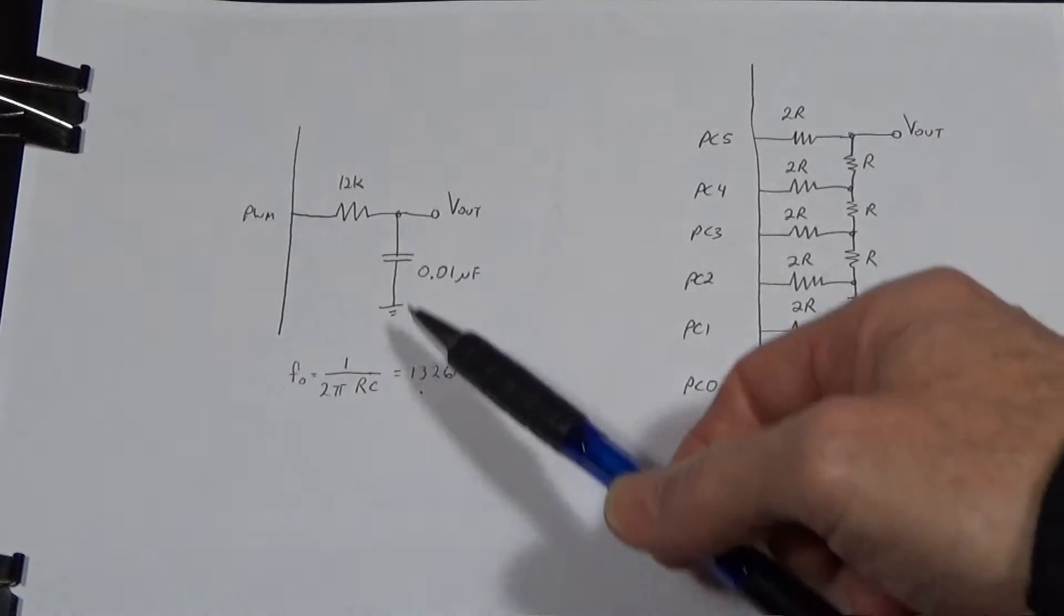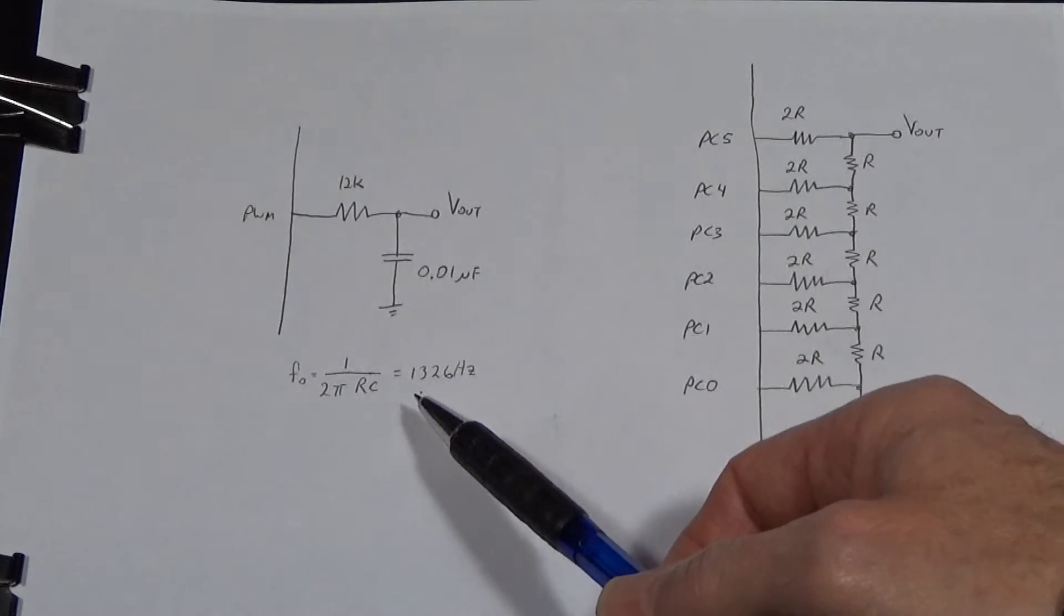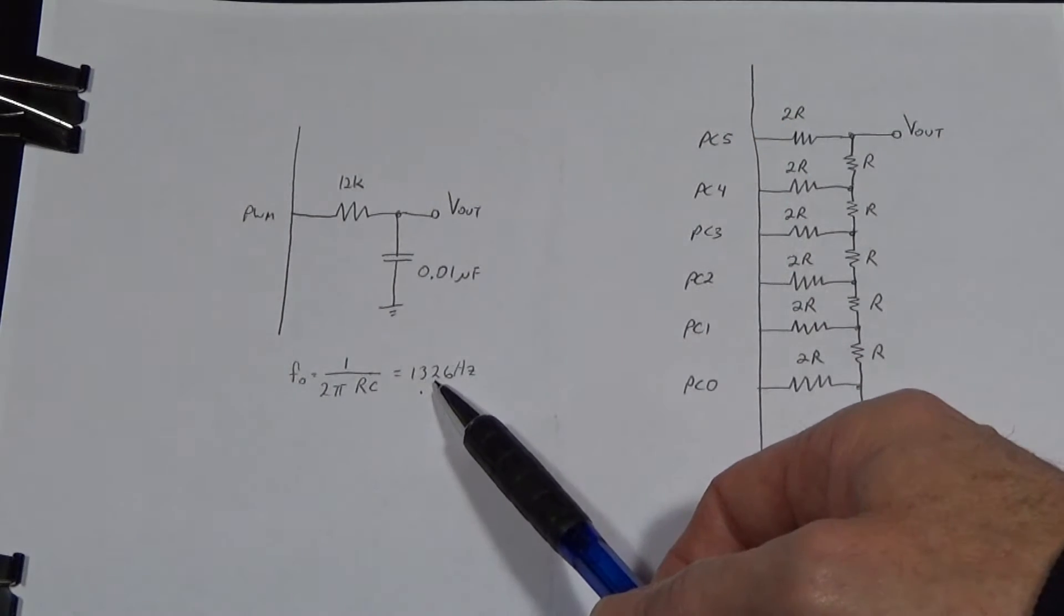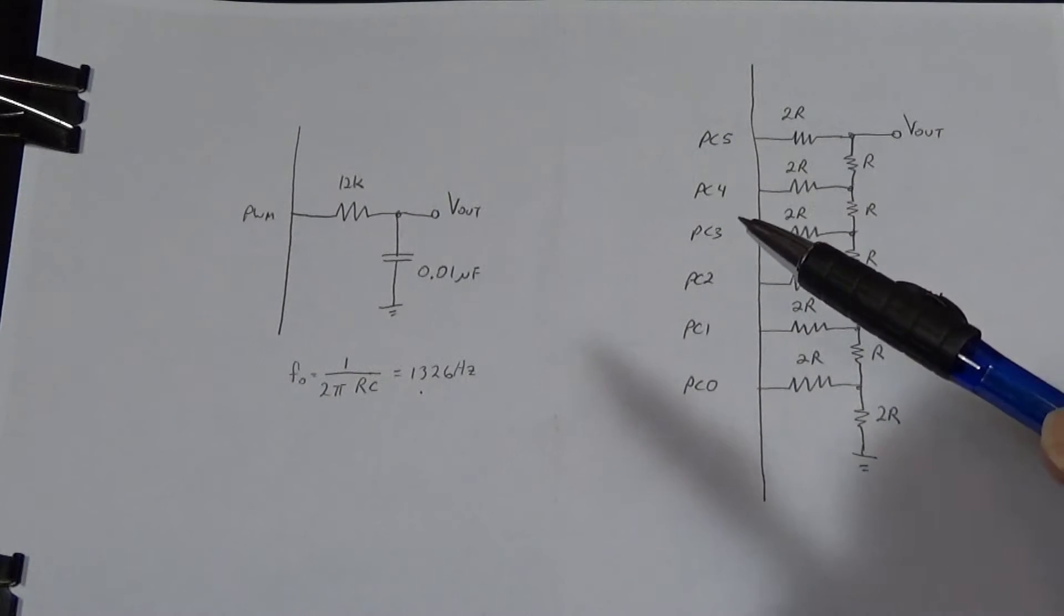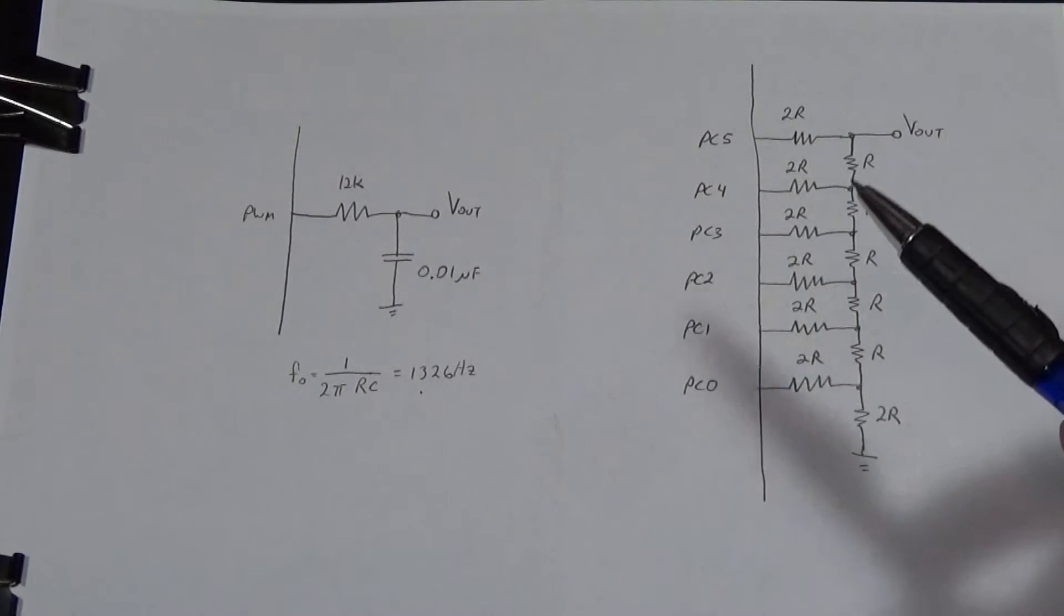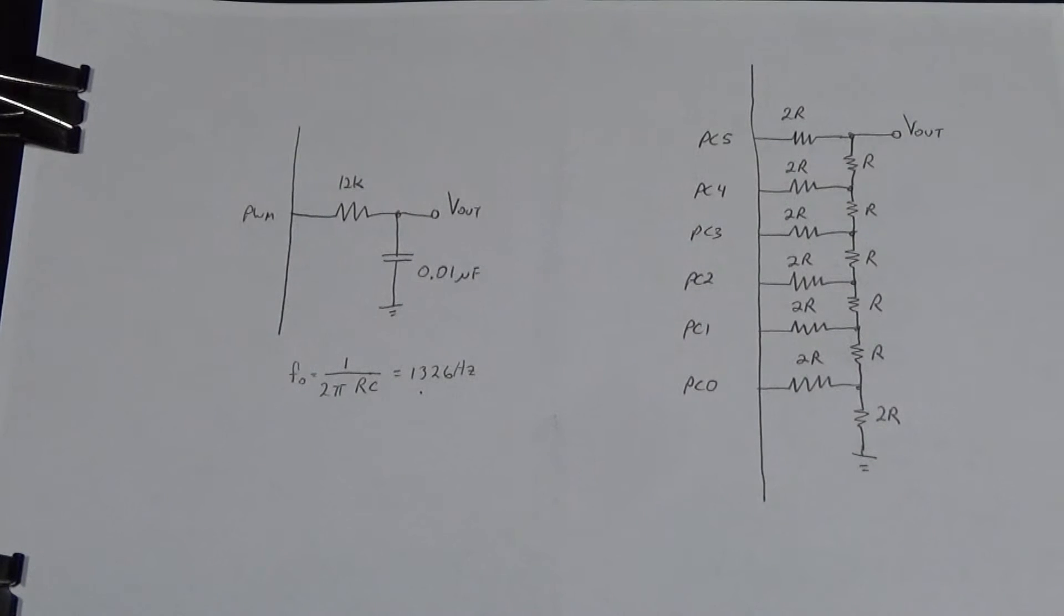And then it just changes, since it's a factor of 10 it's clear that the cutoff frequency is going to change by a factor of 10 so it becomes 13 kilohertz instead of 1300 hertz. But as you saw on the oscilloscope it's not a very good way of doing this. And so what I'm going to show you is yet another method of generating an analog signal from a digital input.